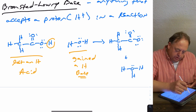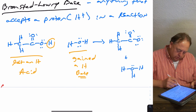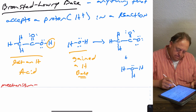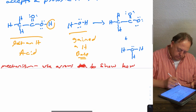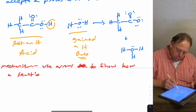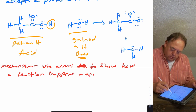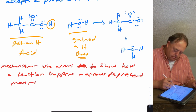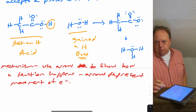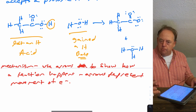Often in chemistry, especially in organic chemistry, we try to depict how a reaction happened — we write what's called a mechanism. We use arrows to show how a reaction happens. Those arrows represent movement of electrons. For those of you going into organic chemistry, you'll be writing mechanisms for reactions all the time.